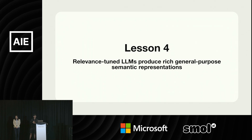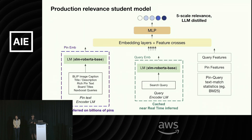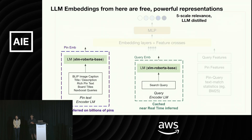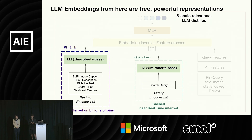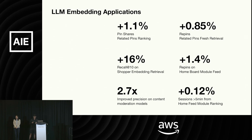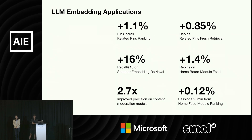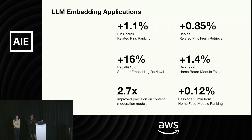As a bonus: we found that relevance-tuned large language models produce really good rich semantic representations, which are very good for general purposes. This is the same production student model — the pin embedding and query embedding are representations we get from these models, which can be used across Pinterest for representing pins and search queries. We also use this to represent boards using their titles. These embeddings, having been distilled from an LLM teacher and containing large language models themselves, are very good at semantic content representations, and perform well across related pins, home feed, and many other surfaces.